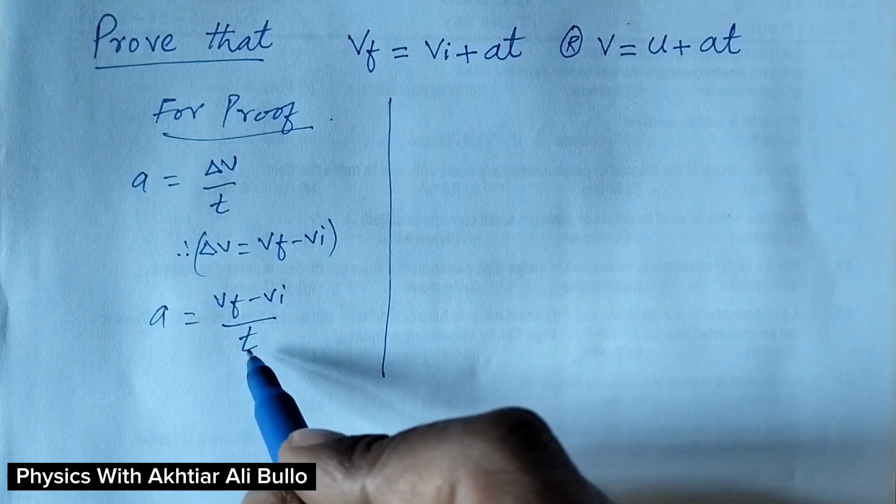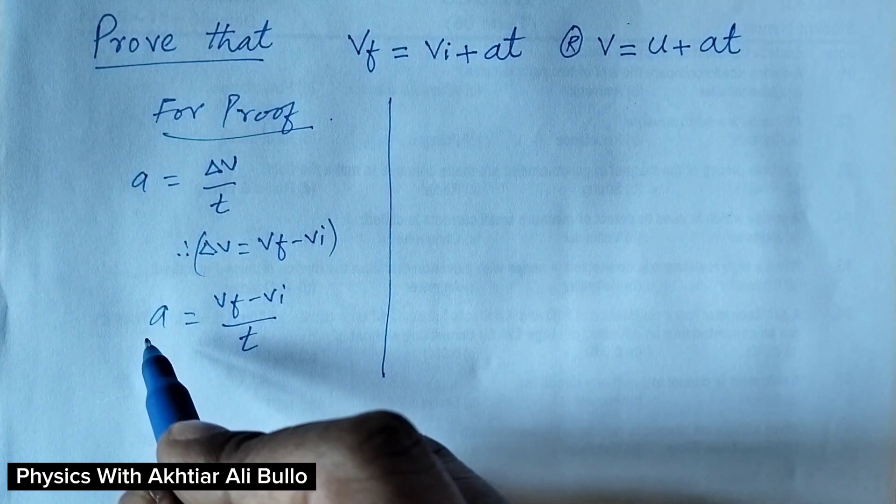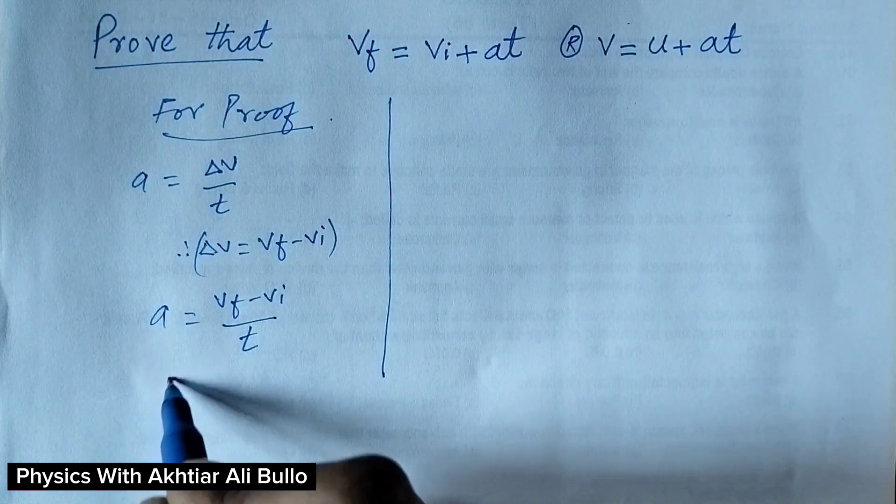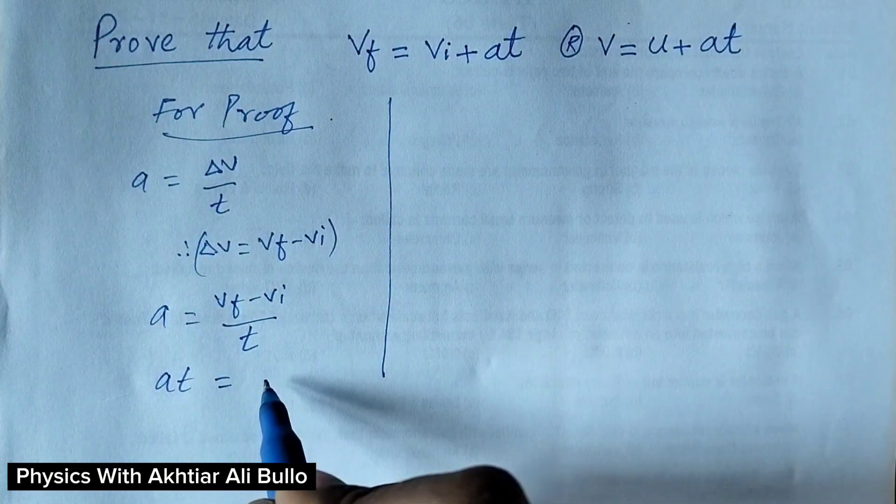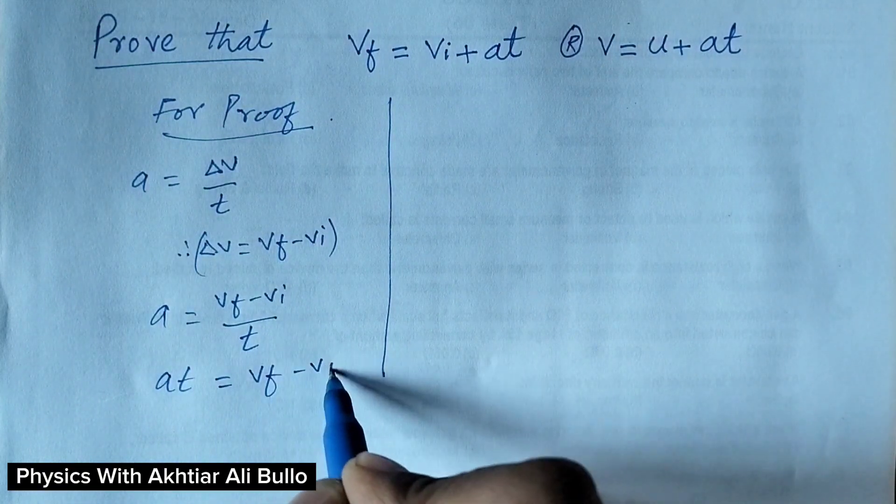T divides, so on the other side it will multiply. So it will be A into T is equal to VF minus VI.